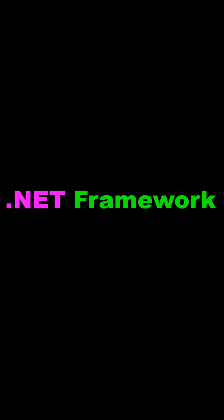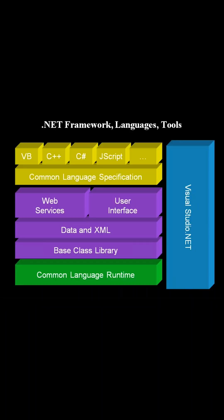What is the .NET Framework? Under .NET Framework, one key feature is the CLS — Common Language Specification. The CLS supports around 61 programming languages, including VB, C++, C#, JavaScript, Python, COBOL, and Fortran.